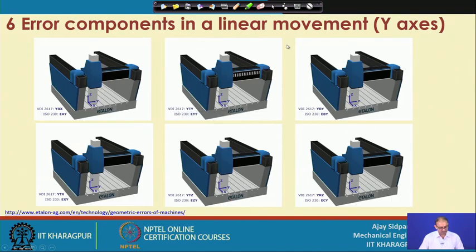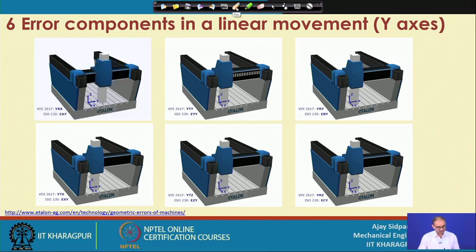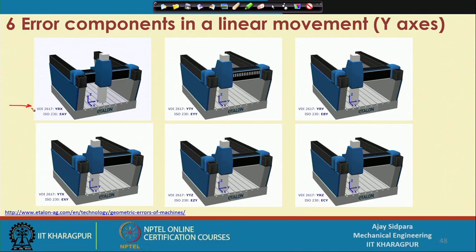Now let us see the same thing for the y-axis — how the error components are in different directions in the y-axis. The first one is this: you can see it is moving but it is tilting around the z-axis, that is in the x-axis direction. Now if you see this coordinate system, this one is the y-axis, this one is the x-axis, and perpendicular to both in the vertical direction is the z-axis, and your spindle is in this direction.